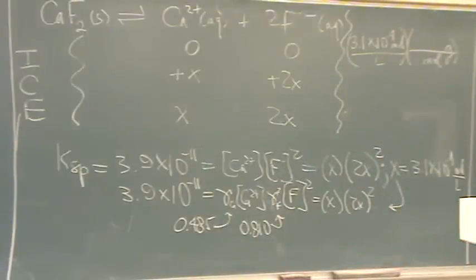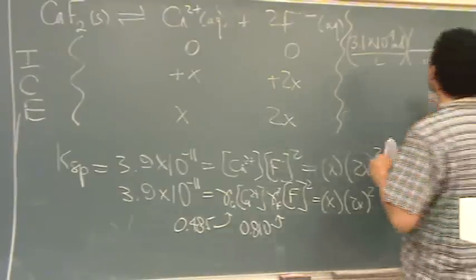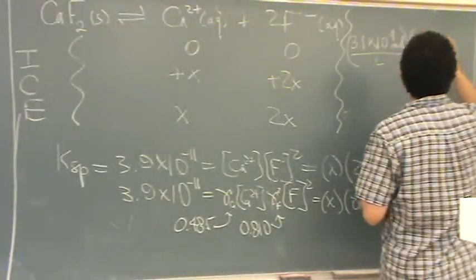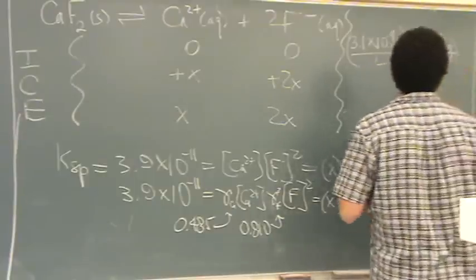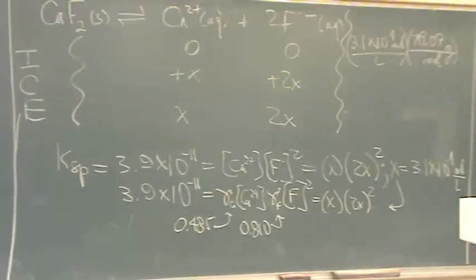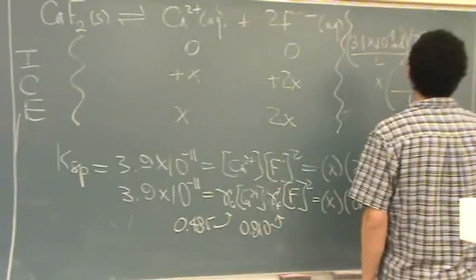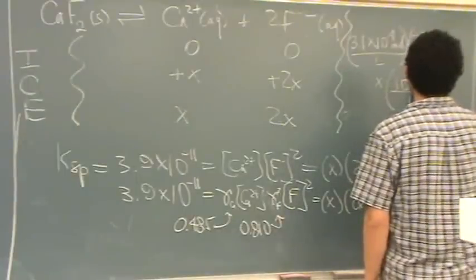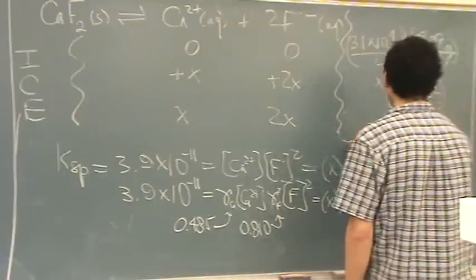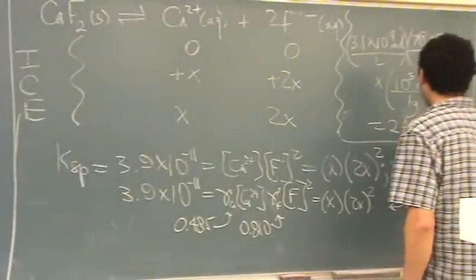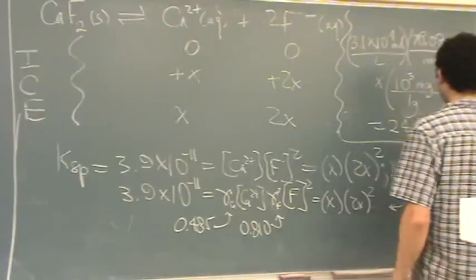And, the molar mass of calcium fluoride is 78.07. So, that's in, now, grams per liter. I'm just going to do one more conversion. Times 1 gram for every 1,000 milligrams. And, now, just doing that conversion, you get 24.4 milligrams per liter.